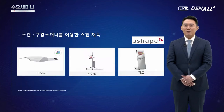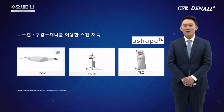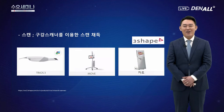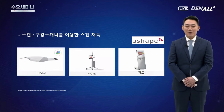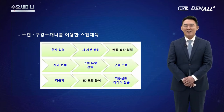구강 스캐너의 경우 여러 회사 제품이 있습니다. 국내에서는 3Shape사의 트리오스, 메디트의 i500, 케어스트림의 CS3600, 얼라인 테크놀로지의 아이테로 등이 주로 사용되며, 오스템 임플란트에서 제공되는 3Shape사의 트리오스를 기준으로 설명드리겠습니다. 트리오스 기준으로 연결된 프로그램의 플로우로 진행되며, 환자 인적 사항 입력 후 교합면을 기준으로 왔다 갔다 하면서 스캔하게 됩니다.